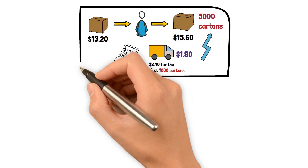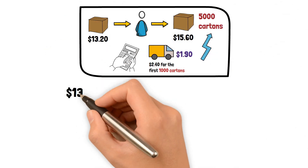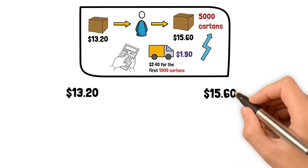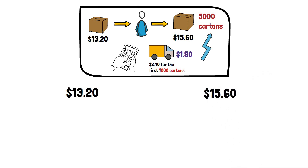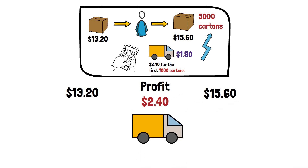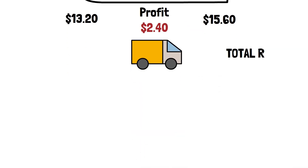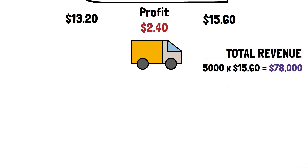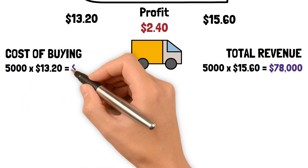The wholesaler can buy peaches from their growers for $13.20 per carton, and with a selling price of $15.60 per carton, the wholesaler will make a profit of $2.40 per carton. But note that shipping costs must also be considered. The total revenue from selling 5,000 cartons would be $78,000, which is 5,000 times $15.60.